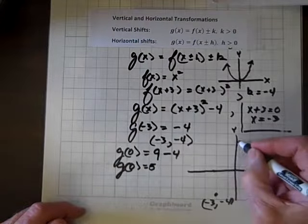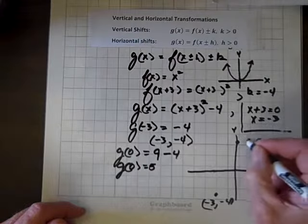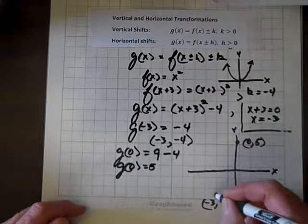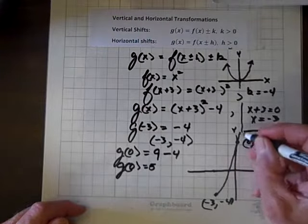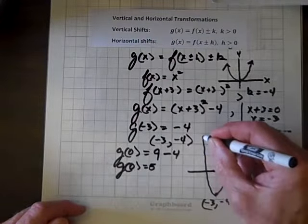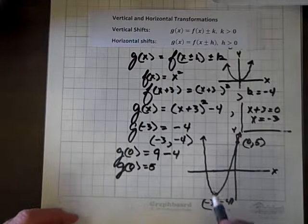So now we know that the y-intercept is at 0, 5. And let's graph our function. And there it is.